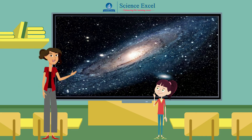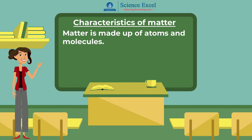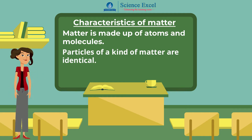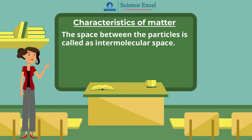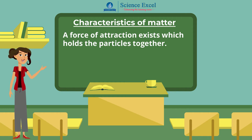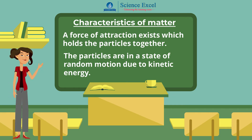Now let me explain the characteristics of matter. Matter is made up of very small particles called atoms and molecules. Particles of a kind of matter are identical. The space between the particles is called the intermolecular space. A force of attraction exists between the particles of matter, which holds them together, called the intermolecular forces of attraction. Particles are in a state of random motion as they possess kinetic energy.